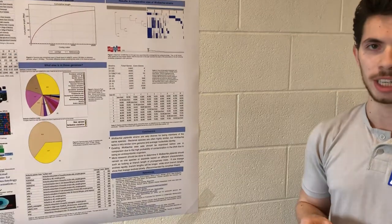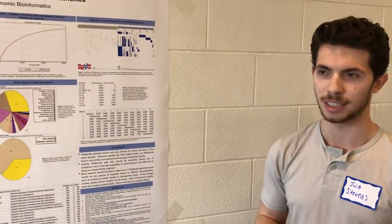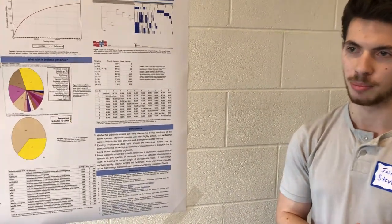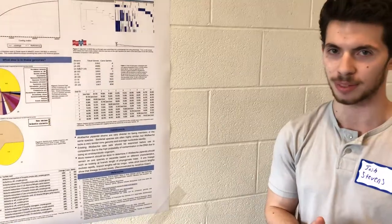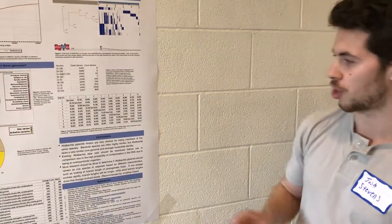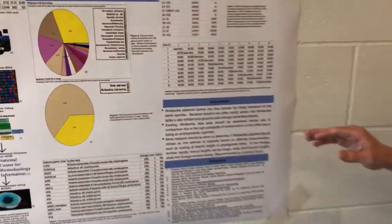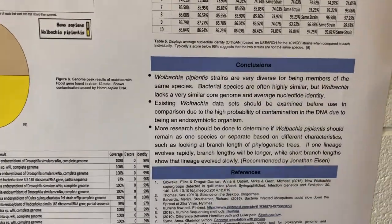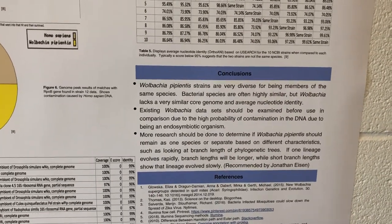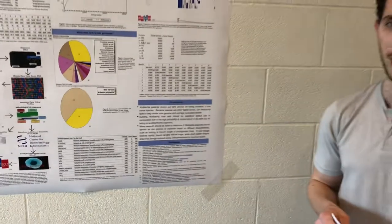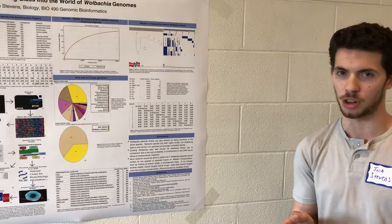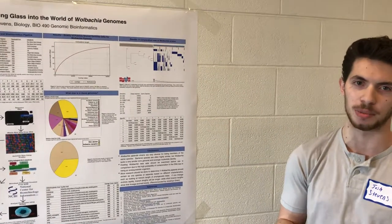In conclusion, Wolbachia strains are highly diverse and can be considered different species in some ways, but more research needs to be done to confirm this. One approach would be looking at branch length on phylogenetic trees, as suggested by Jonathan Eisen. Longer branches indicate lineages that evolved more rapidly, while shorter branches indicate slower evolution. Shorter branches could be considered the same species, while longer ones may not — and that is where this research could go next.